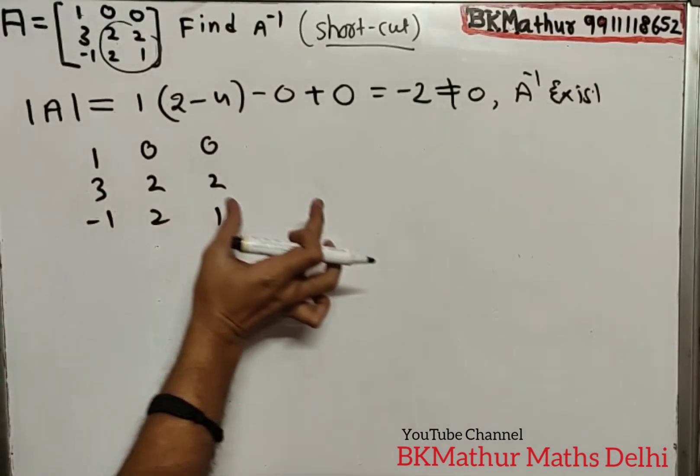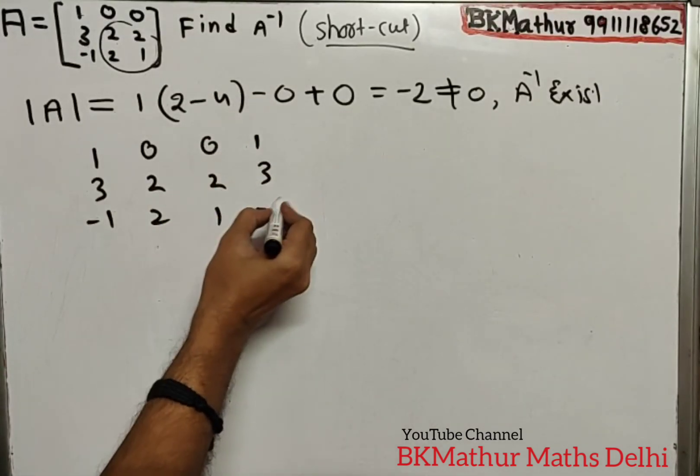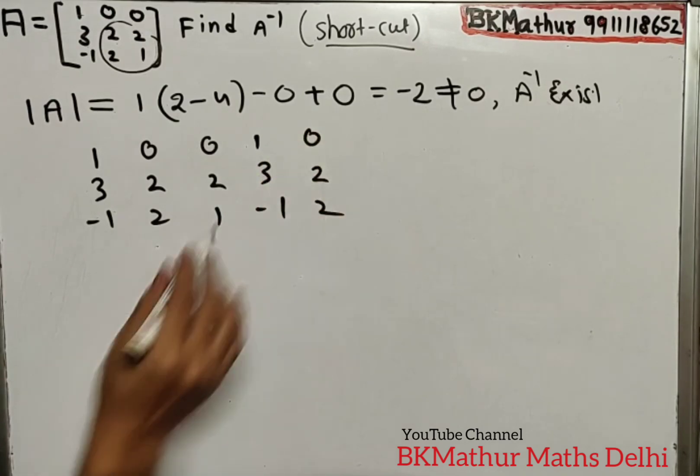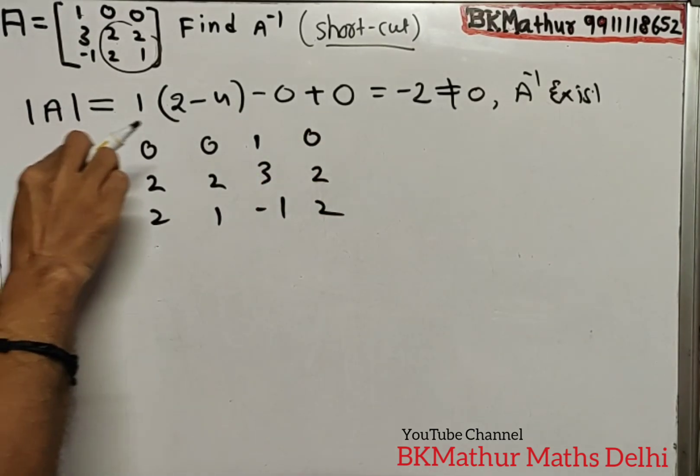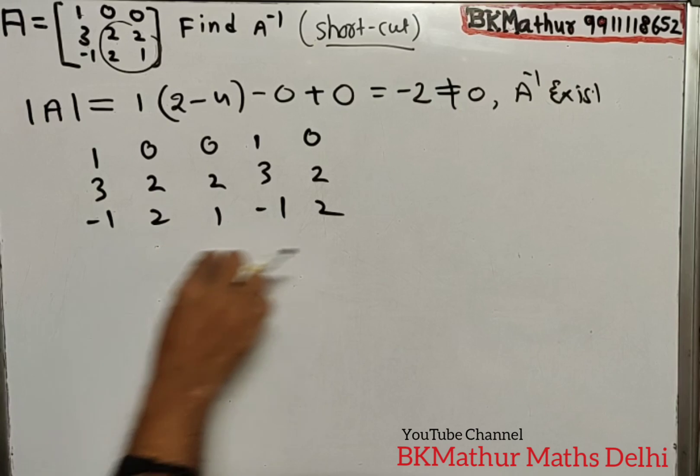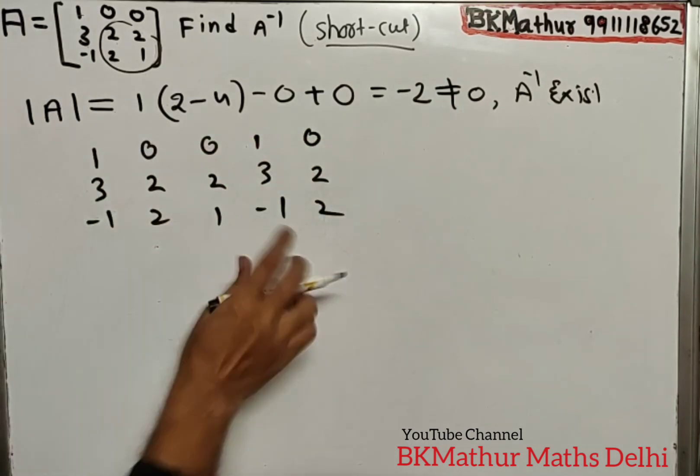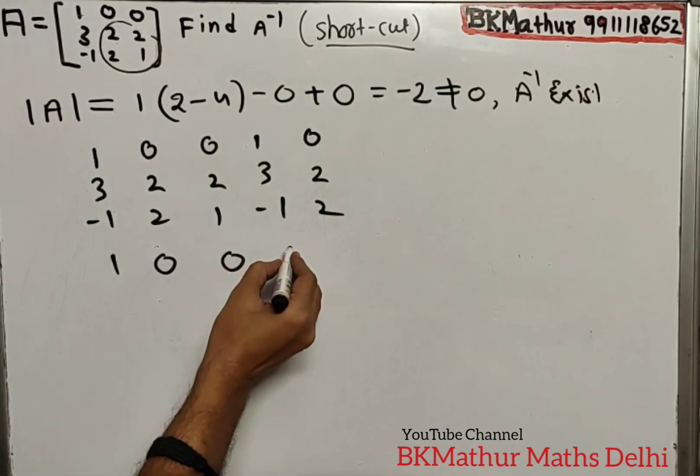Then take the first two columns and write them ahead - copy-paste: 1, 3, -1, 0, 2, 2. Then take the first two rows and write them below - Ctrl+C, Ctrl+V. I'm speaking in computer language - copy-paste.